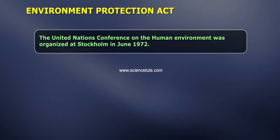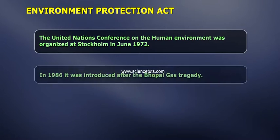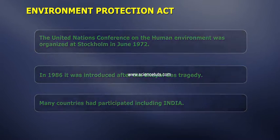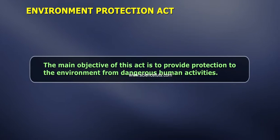Environment Protection Act: The United Nations Conference on the Human Environment was organized at Stockholm in June 1972. In 1986, it was introduced after the Bhopal gas tragedy. Many countries participated including India. The main objective of this act is to provide protection to the environment from dangerous human activities.